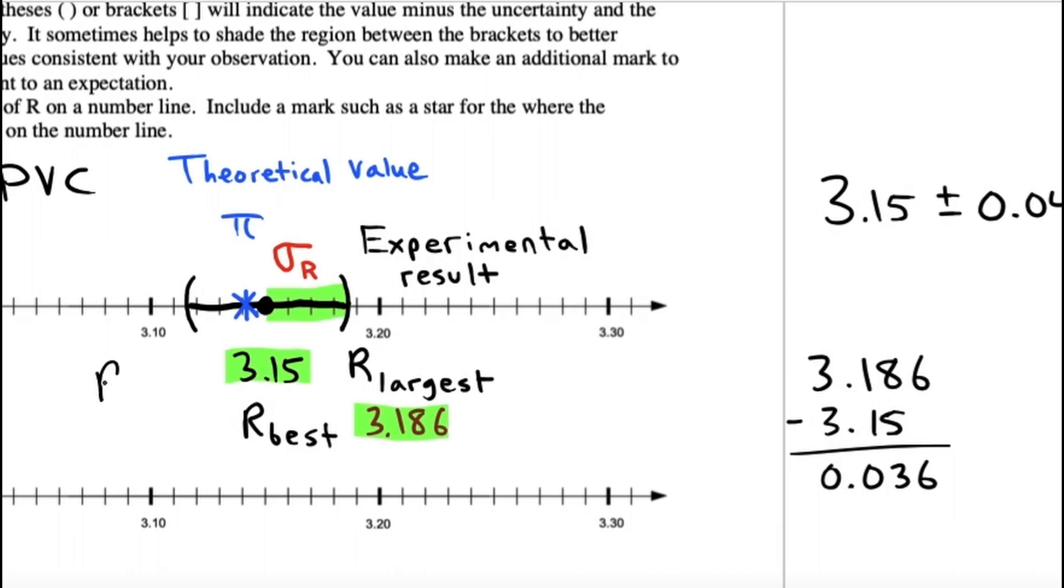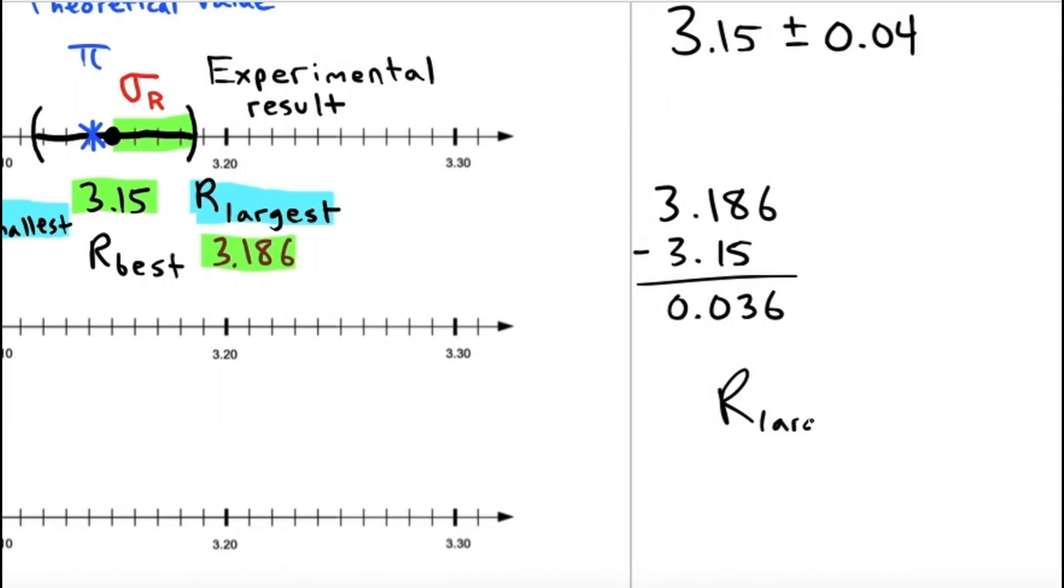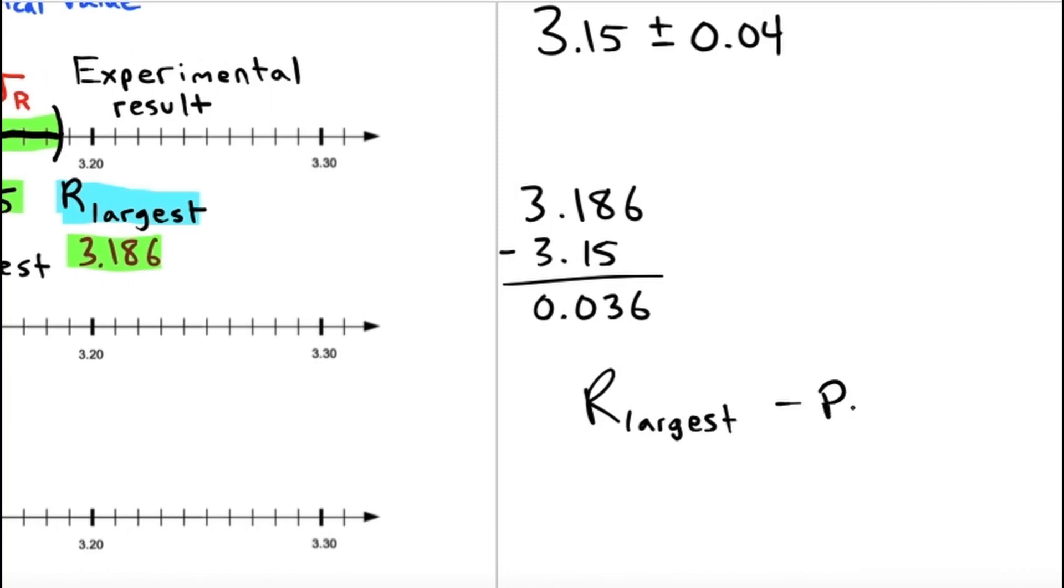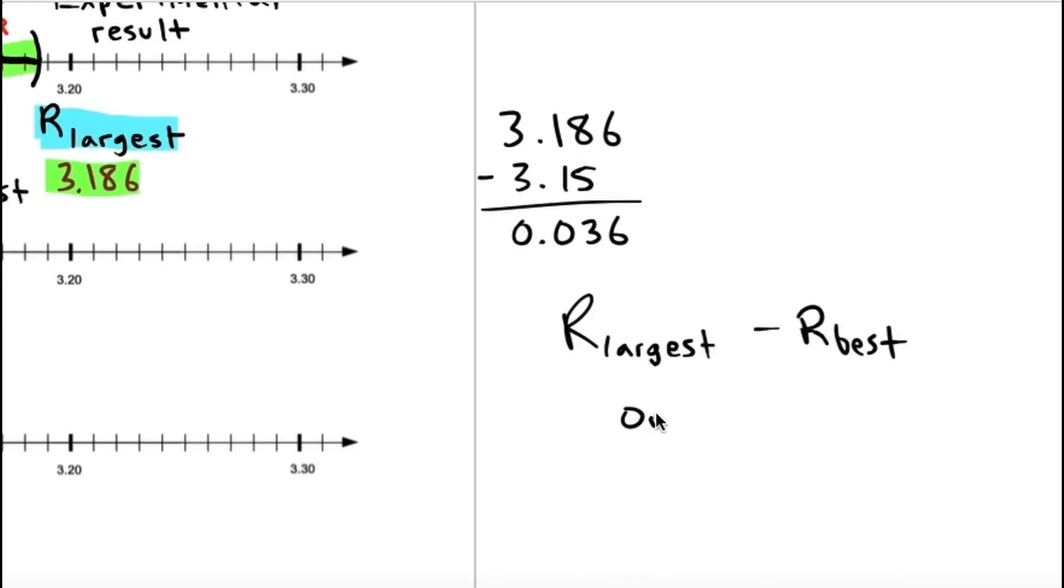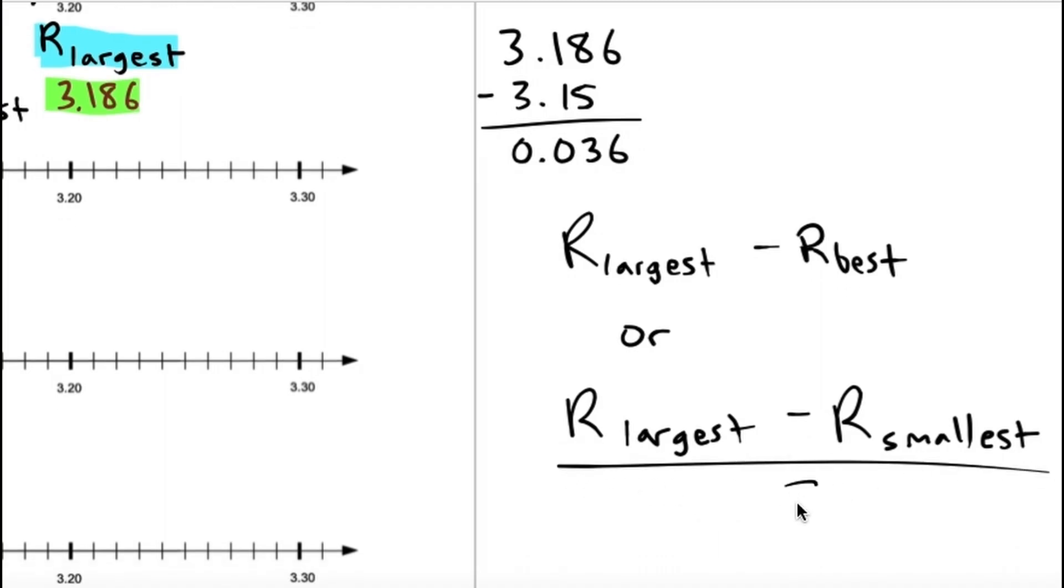The distance from the center point to the edge of the confidence interval will be called σR, which is your uncertainty in the result. So if we just take that 3.186 and subtract minus this, that's how we can get a good estimate of the uncertainty. So, 0.036. So, our final answer there would be 3.15 plus or minus 0.04. That's where I got the 0.04 from. Another method would be to do largest minus smallest and divide by 2.